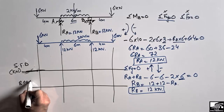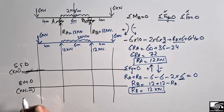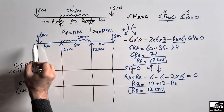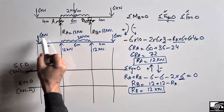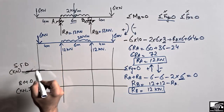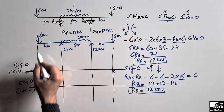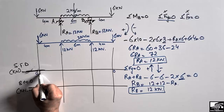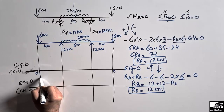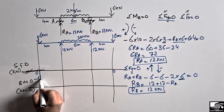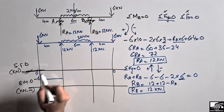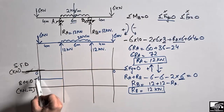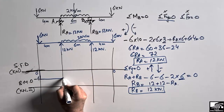The shear force diagram is in kilonewtons and the bending moment diagram is in kilonewton-meters. Starting from the left end: the 6 kilonewton load acts downward, so shear force starts at minus 6. There is no load on the overhang, so it remains a horizontal line at minus 6 until support A. At A, RA equals 12 kilonewtons acts upward, so shear jumps to minus 6 plus 12 equals plus 6.